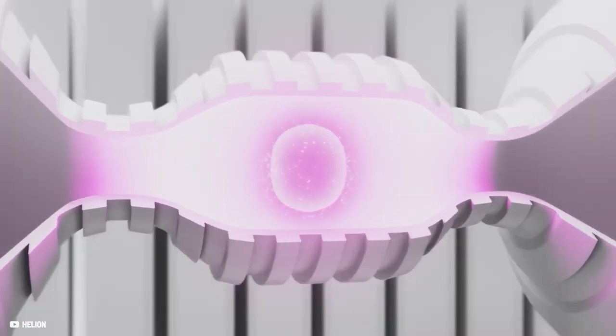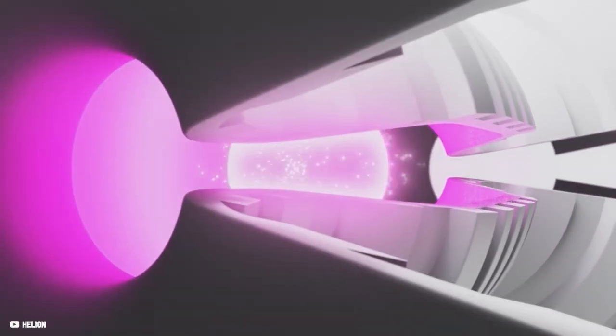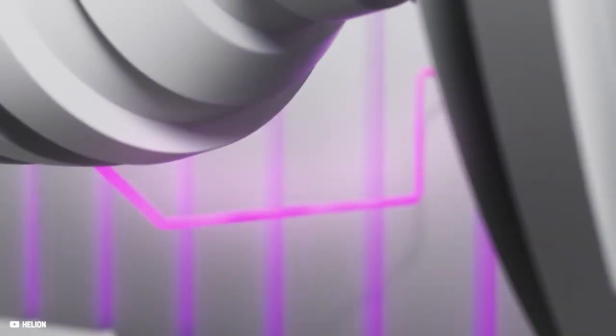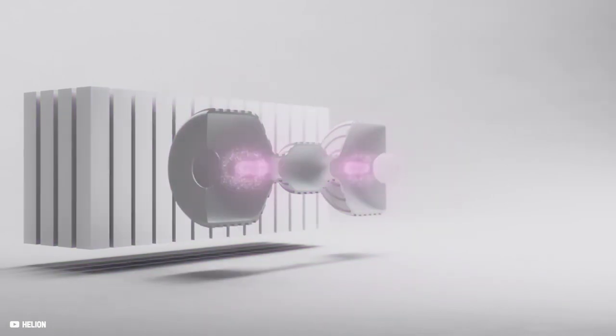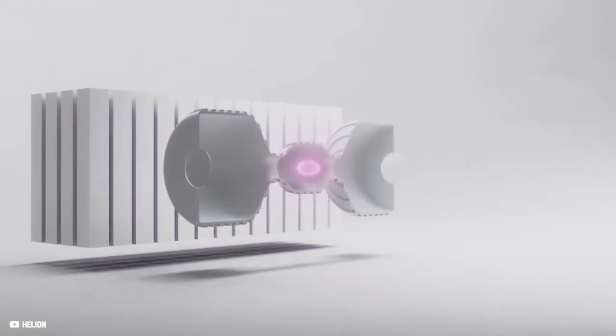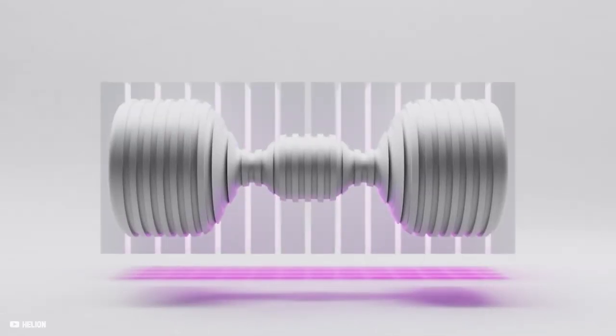The released energy strengthens the magnetic field of the plasma and pushes back the magnetic field of the machine, causing the change in magnetic flux. This change in magnetic flux induces an electrical current into the machine's coils, which are recaptured as electricity and directly supplied to the grid. This whole process occurs in a millisecond and is repeated in a pulsed manner. The device's energy output can be adjusted by changing its repetition rate.